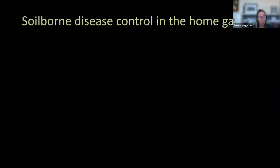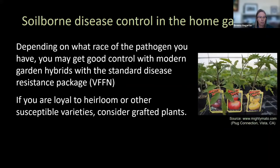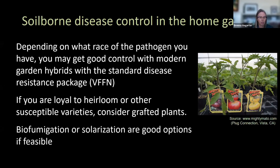Briefly on soil-borne disease control in the home garden: depending on what race of the pathogen you have, modern hybrid varieties with a standard disease resistance package may give good control. If you've had problems with heirloom varieties, switching to a hybrid might do the trick. If you're loyal to heirloom or susceptible varieties, grafted plants are an option — some nurseries now sell them, and the rootstocks are generally quite disease resistant. If feasible, biofumigation or solarization could also be good options for the home garden.